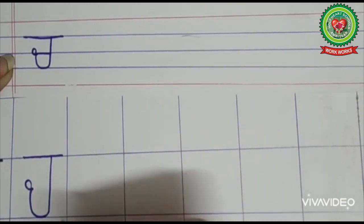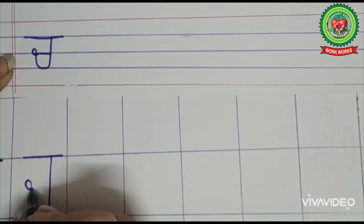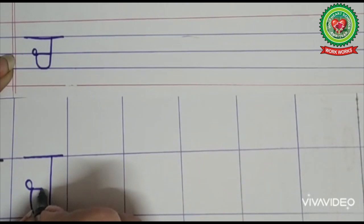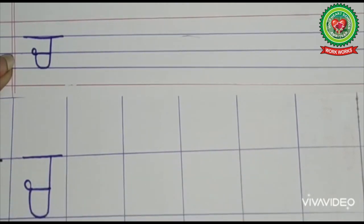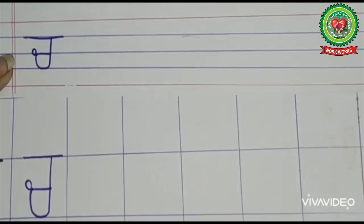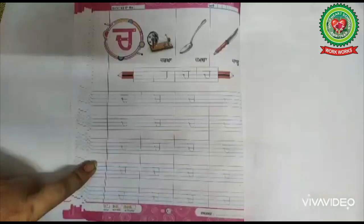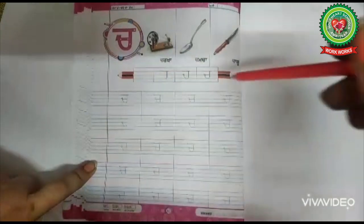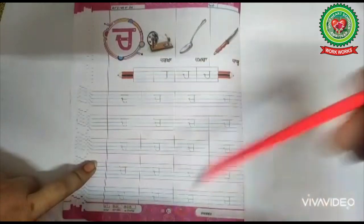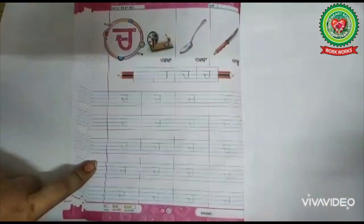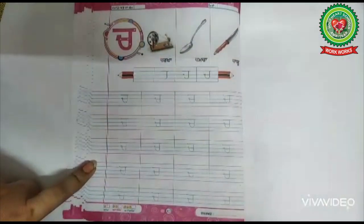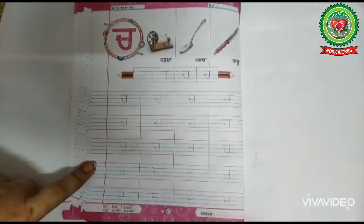Then we will round up the curve and draw a small sleeping line like this. This is Chacha. I hope you will finish page number 30 in good handwriting. Thanks for watching the video.